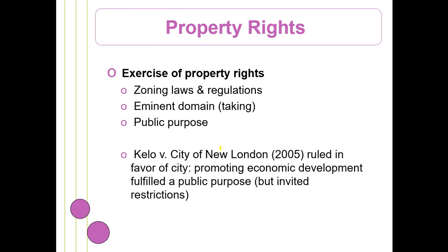Designation of property is a very important function of city governments in exercising property rights. We've already talked about zoning laws and regulations as one of their primary responsibilities — commercial development, residential development, and industrial development. State and local governments have the power of what is called eminent domain, which is in the U.S. Constitution. The federal government has this power, and state and local governments have this power as well: if there is a public purpose for which land is needed for the public good, the local government can take that property if they give the owner fair compensation.